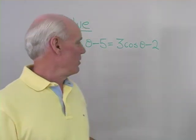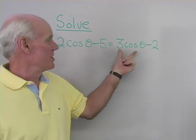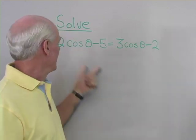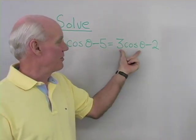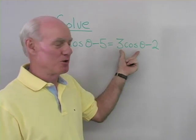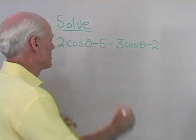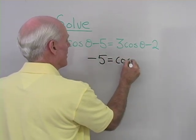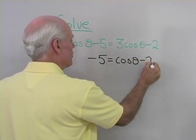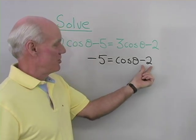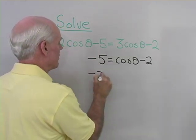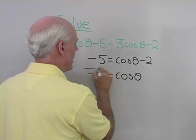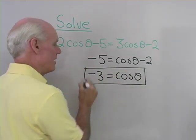Here's another trig equation: 2 cosine theta minus 5 equals 3 cosine theta minus 2. Let's solve it. I have 2 cosine theta on the left and 3 on the right; adding negative 2 cosine theta to both sides gives negative 5 equals cosine theta minus 2. Adding 2 to both sides gives negative 3 equals cosine theta.